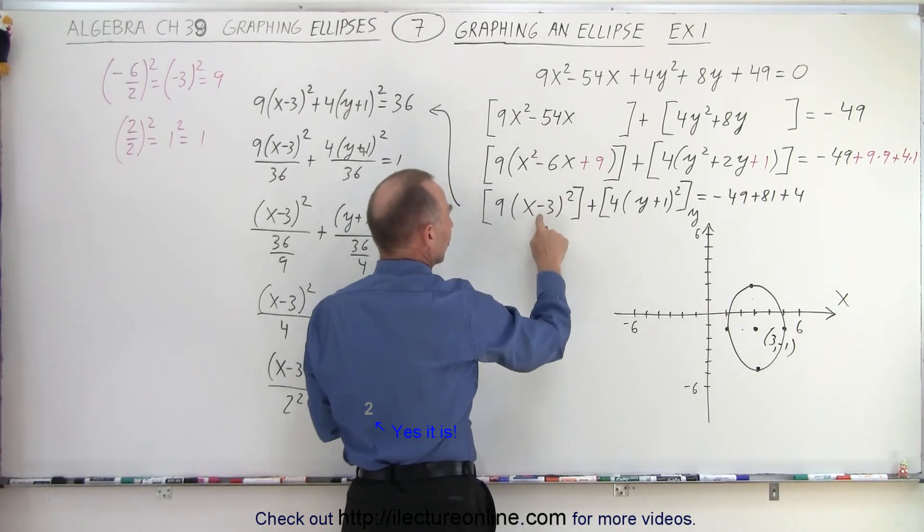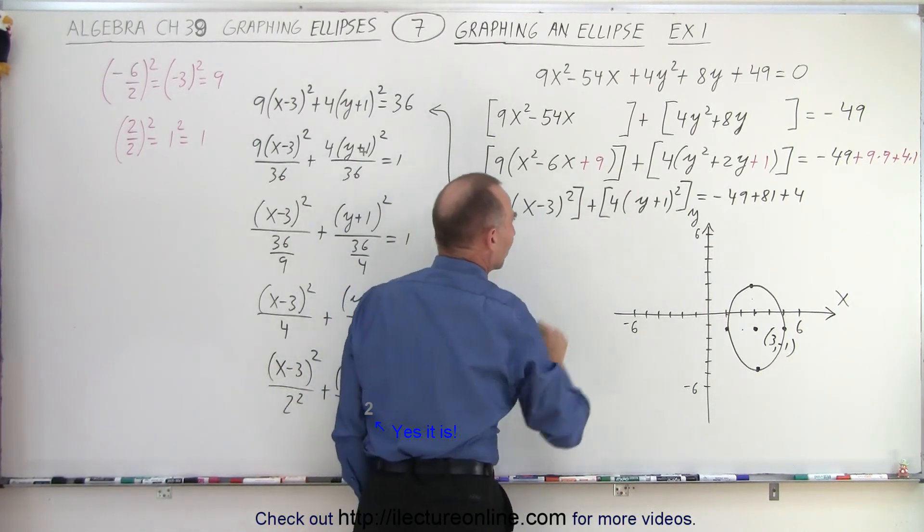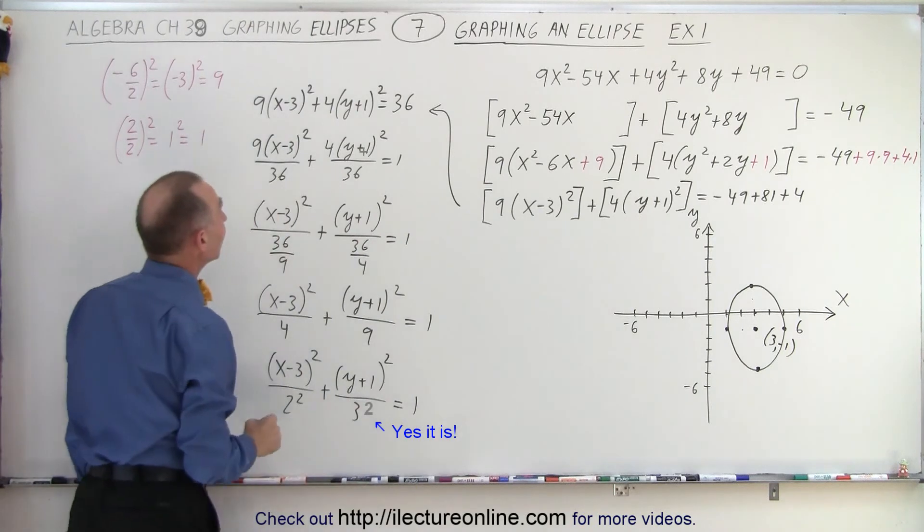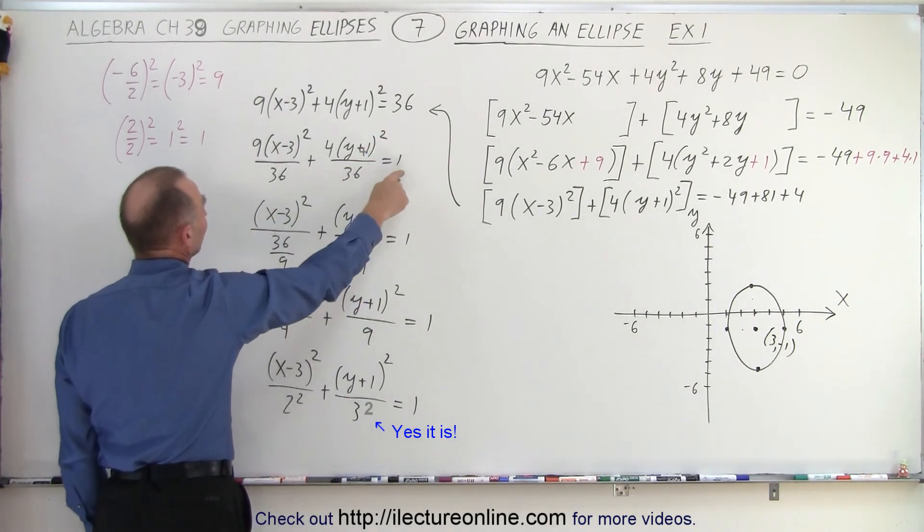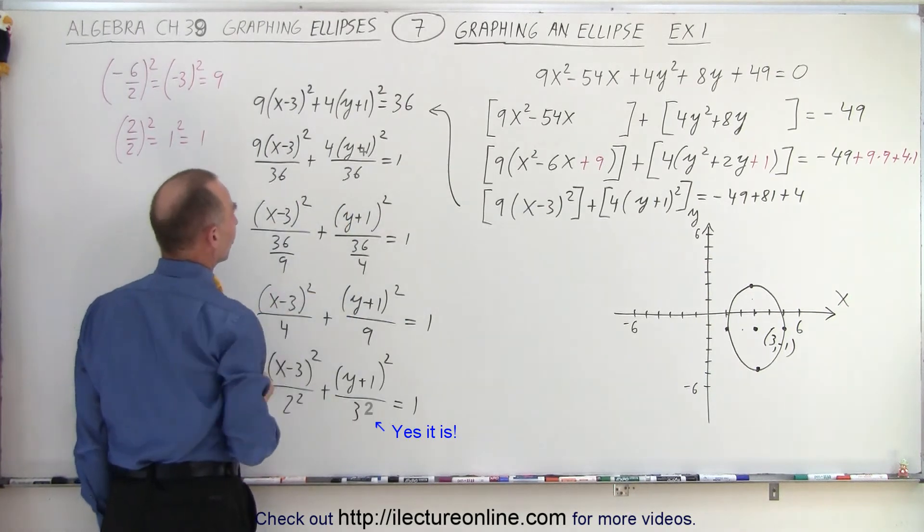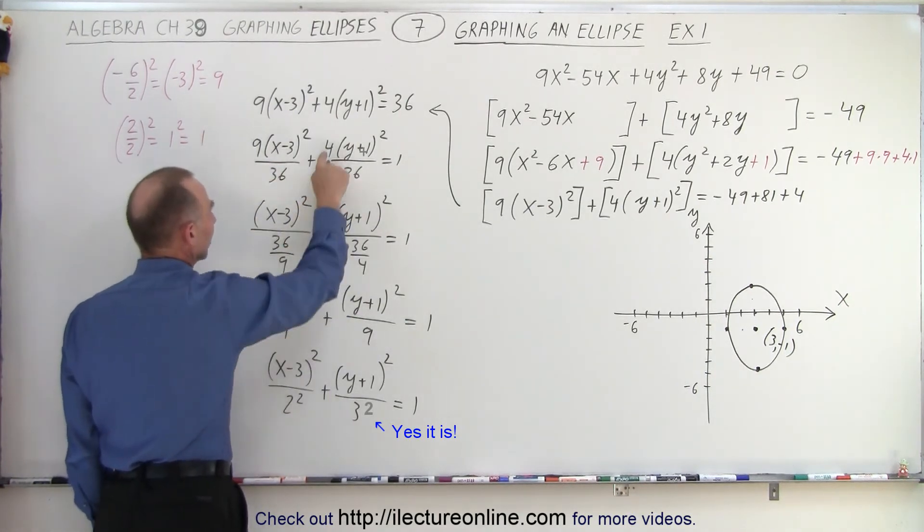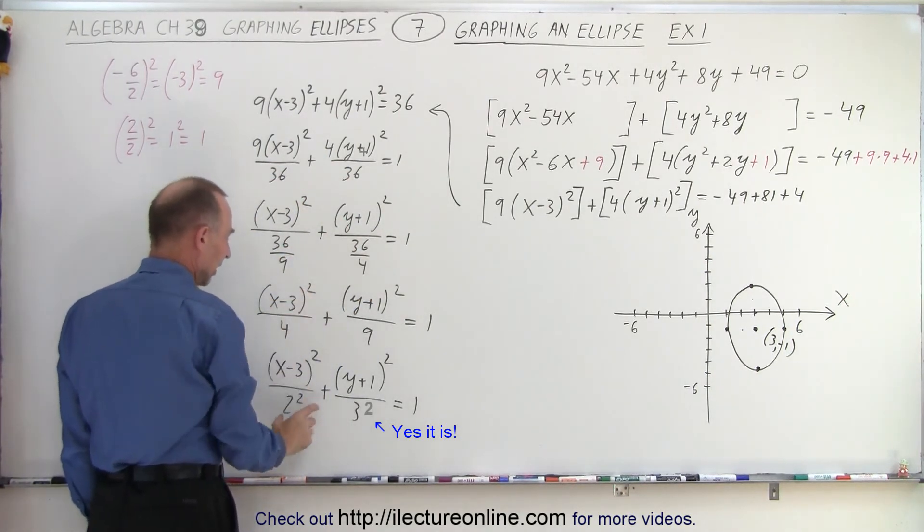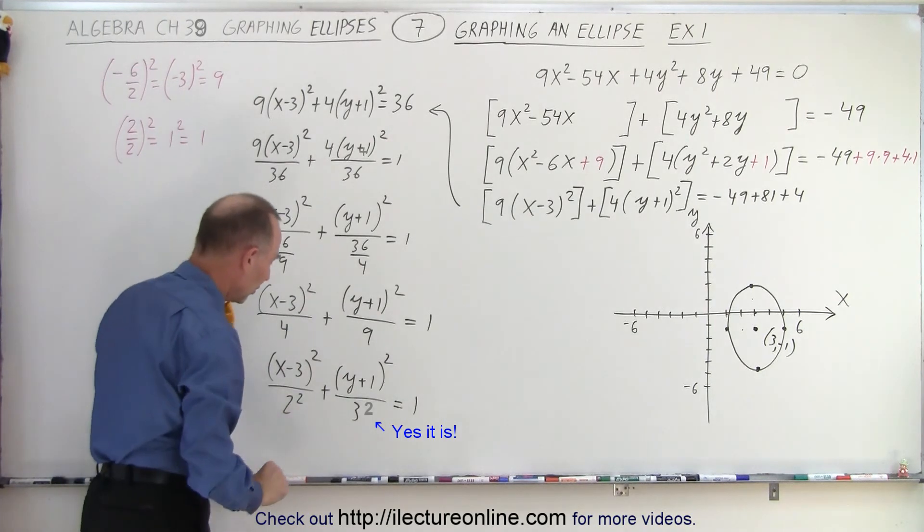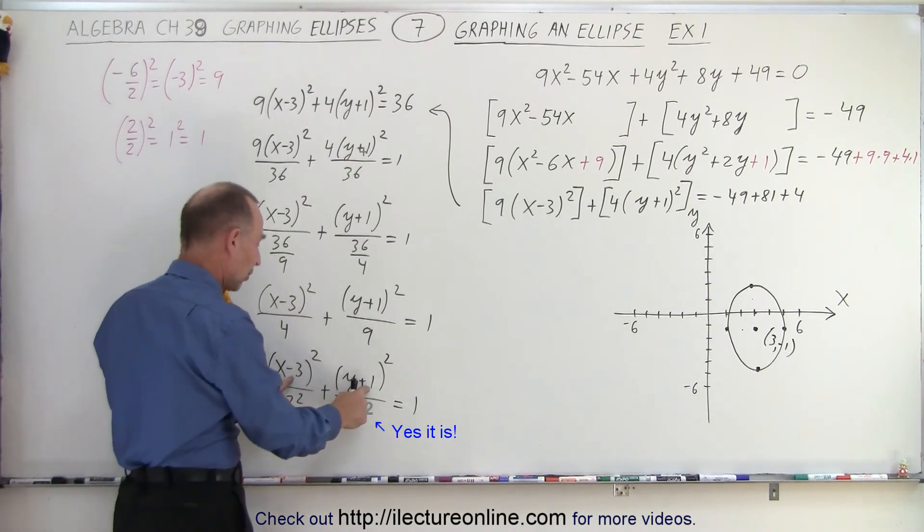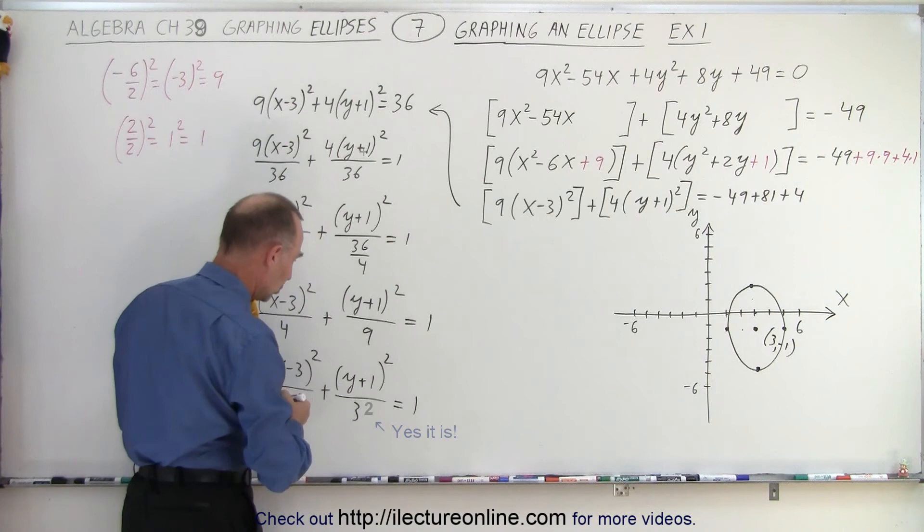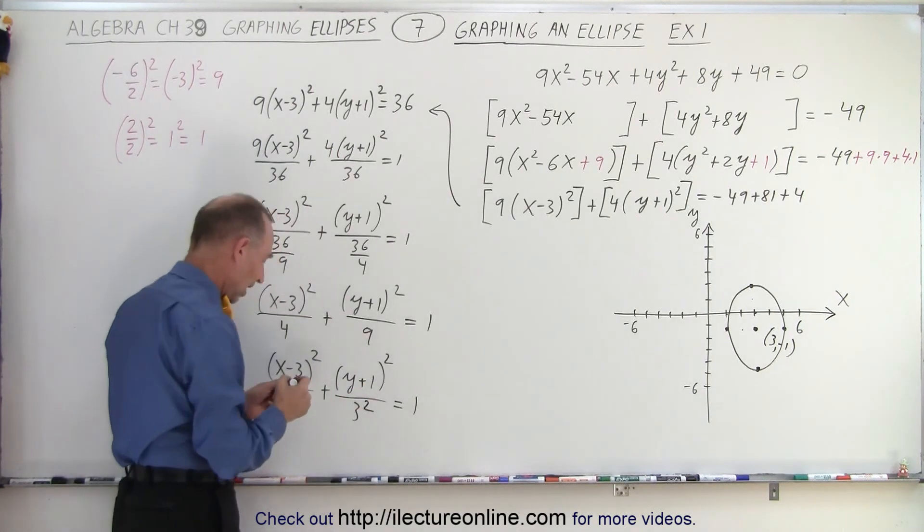Then you collect common terms after you factor. You can see that this turns into x minus 3 squared. This turns into y plus 1 squared. Then after you combine the right side, you can see you divide everything by 36 to turn this into a 1. Bring this down and bring this down. Simplify and write it as the number squared in the denominator. Finally, once you have it in this form, you find the central point of the ellipse by using the offset, and oh, another mistake.